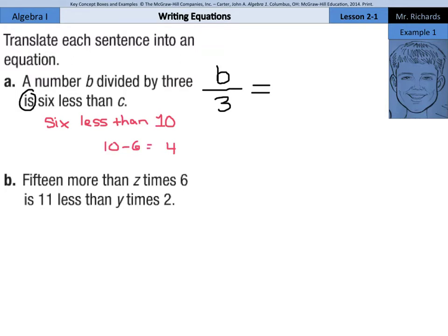Now, to get this into our equation, we're going to take out this 10 and put a C, because we want 6 less than C, which means it's going to be, as you can see, C minus 6.